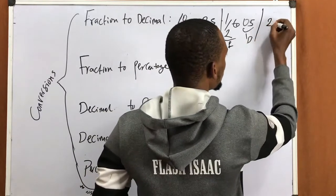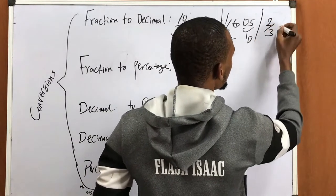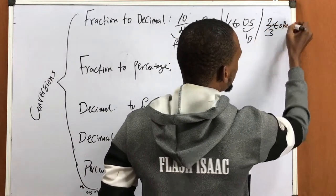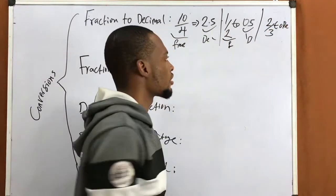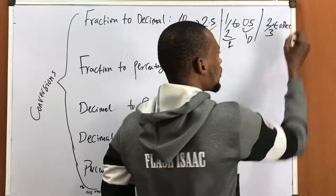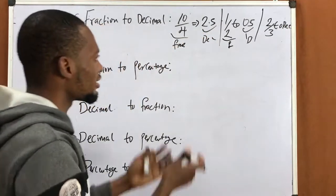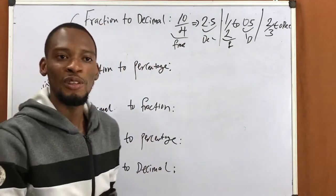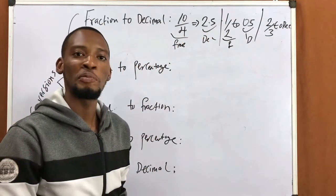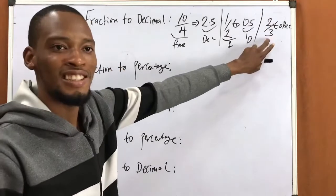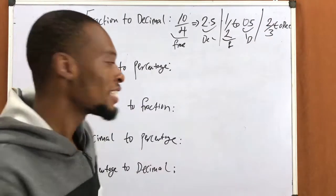So try this: 2 over 3 to decimal, or to base 10, and let me know your answer in the comment box. That's your assignment one.